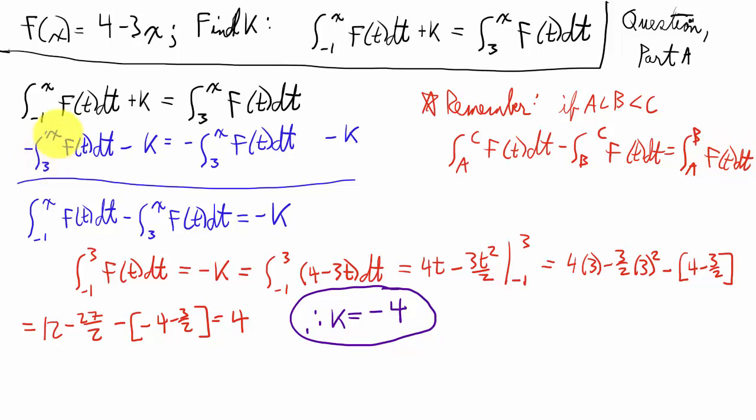We're going to subtract the integral from 3 to x of f of t dt from both sides, while also subtracting k. It might be peculiar, it's a negative k, but we want this part right here to become the integral from negative 1 to 3 of f of t dt. If I'm going too fast, just go ahead and press pause, but I'm going to just continue right now.